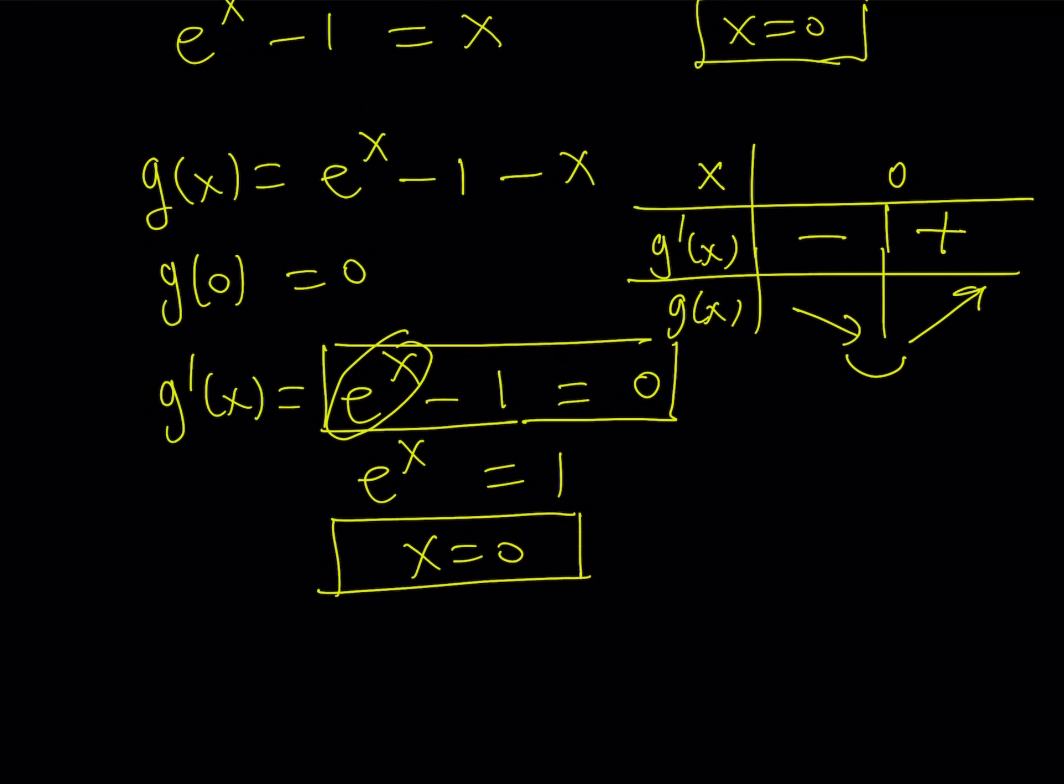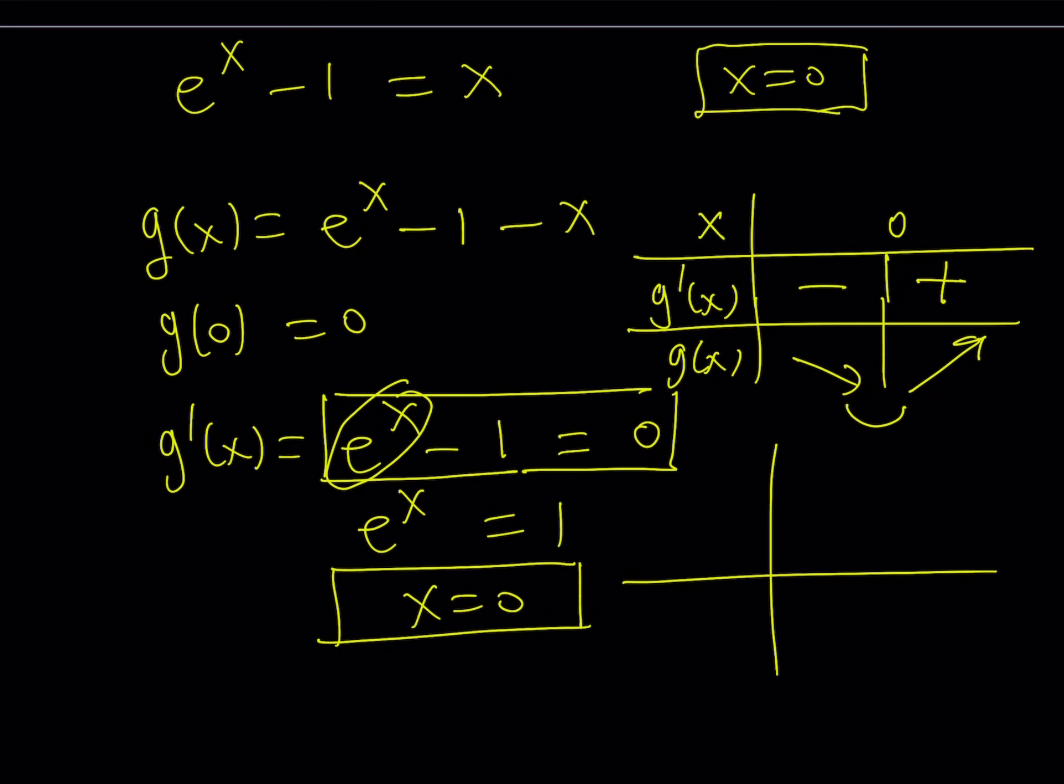And another thing, this means that we have a minimum at 0 and g of 0 is also 0. So our function is going to touch the origin at 0, 0. And then otherwise, it's just going to be increasing and decreasing.